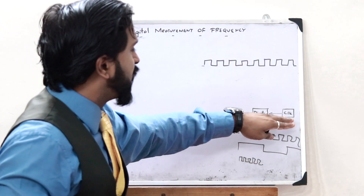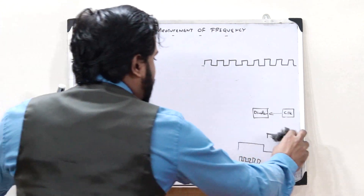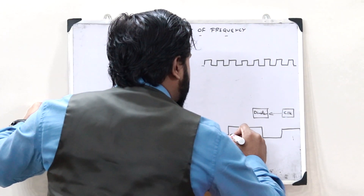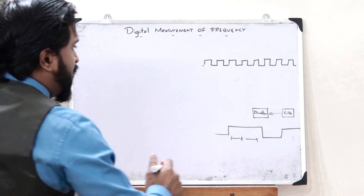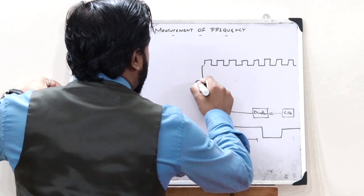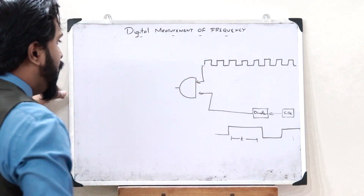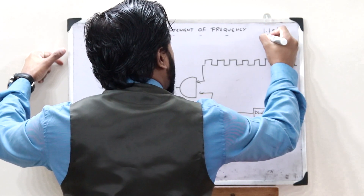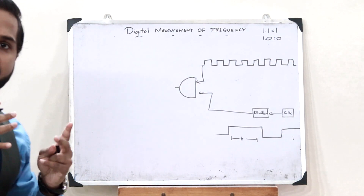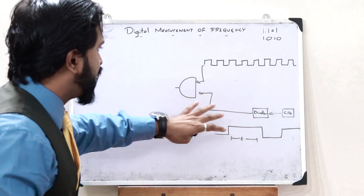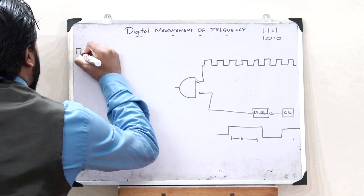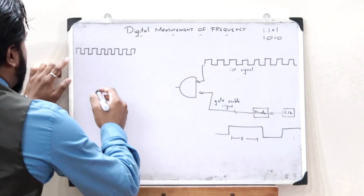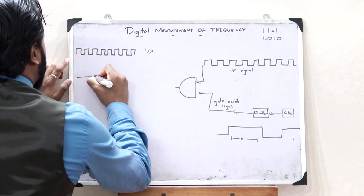Whatever signal is generated by the clock is passed through a divider circuit. Once we pass it through a particular divider circuit, we obtain a particular signal whose time period T is known to us. Next, these two signals are passed through a particular AND gate. The input signal is the one whose frequency we have to find, and the output from the divider is referred to as the gate-enabled signal.